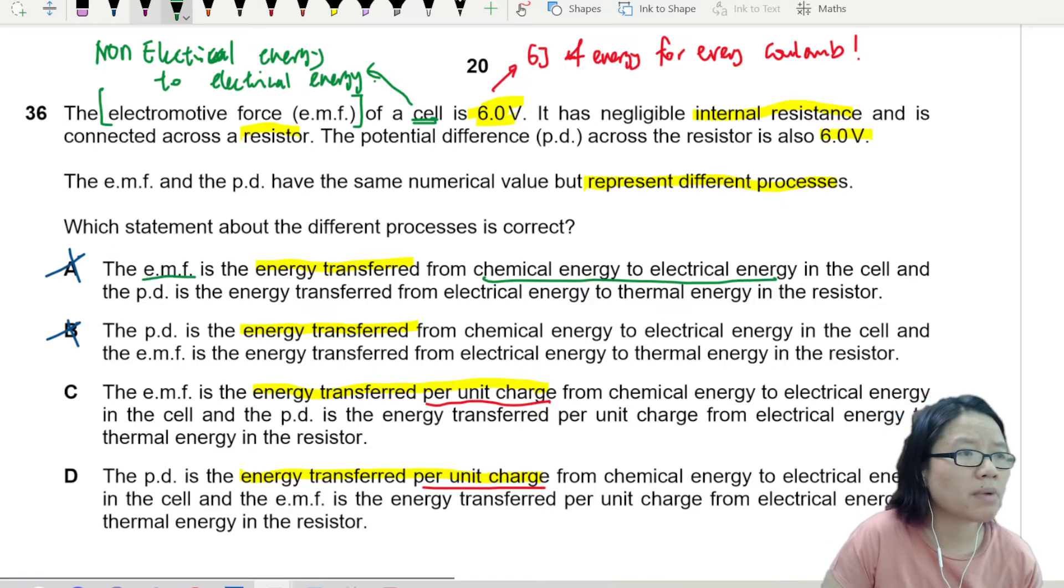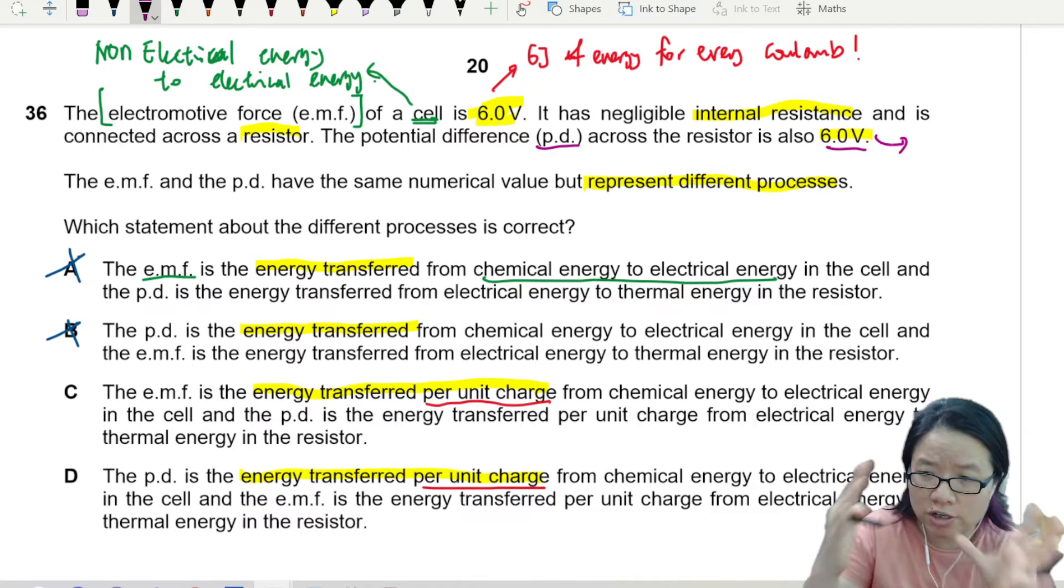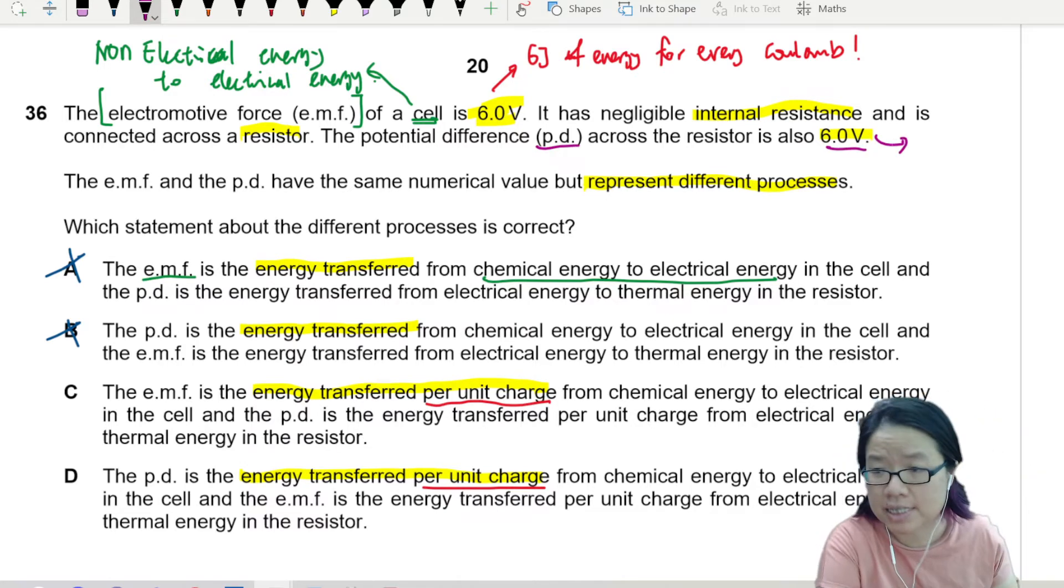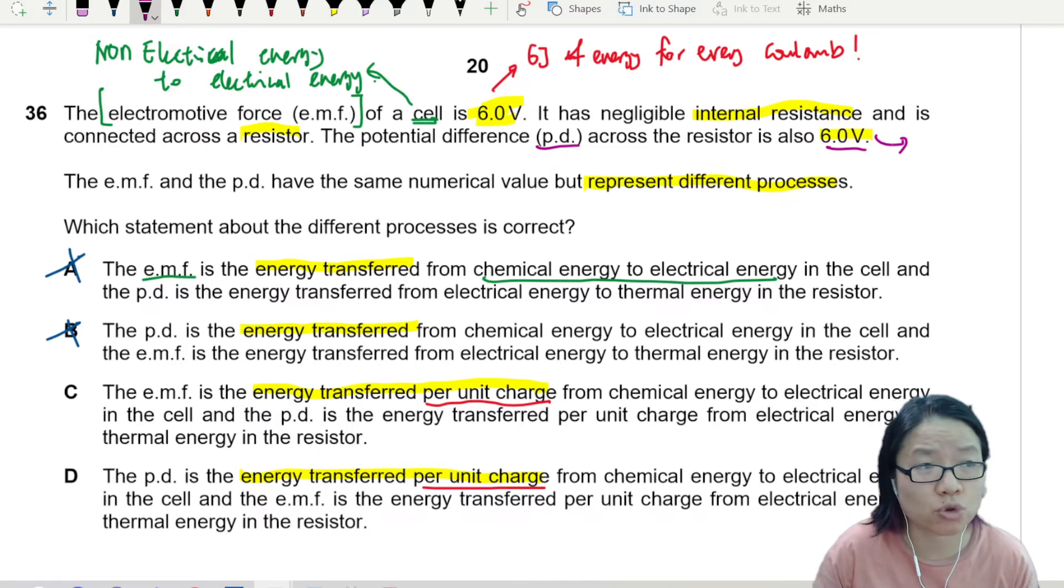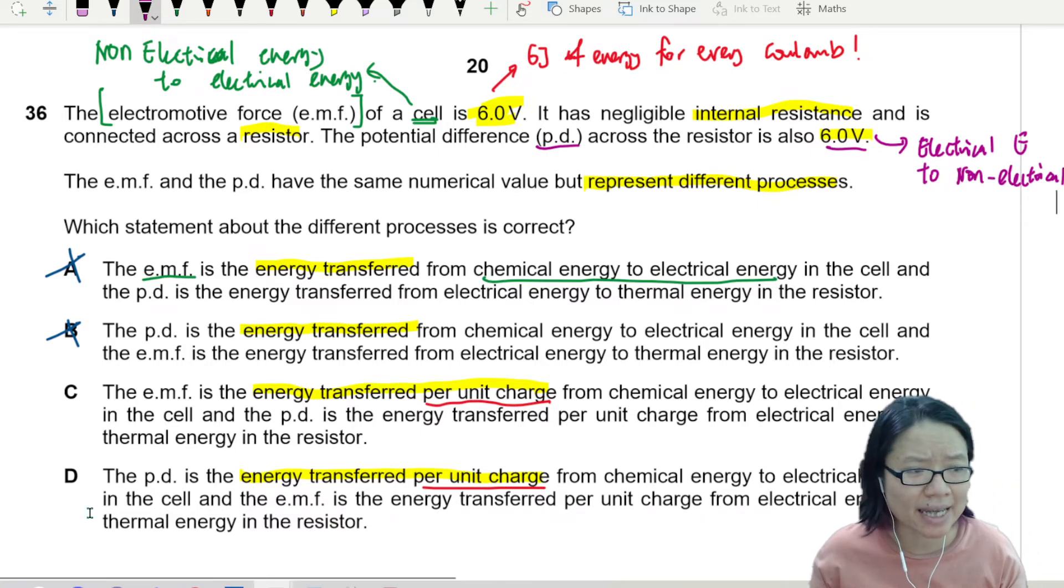And what about potential difference? So recall that potential difference is normally across something. Maybe it's across a resistor. Maybe it's across a lamp. Although they have the same unit, now we are talking about electrical energy to other forms of energy like heat or light. Or if you are sitting under a fan, kinetic energy.